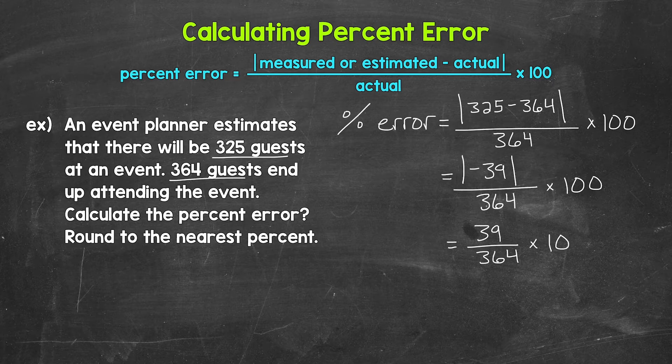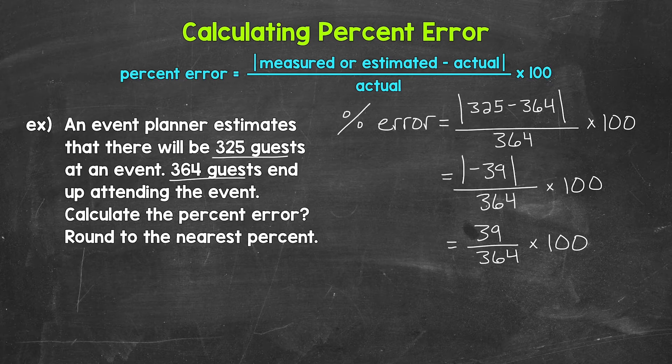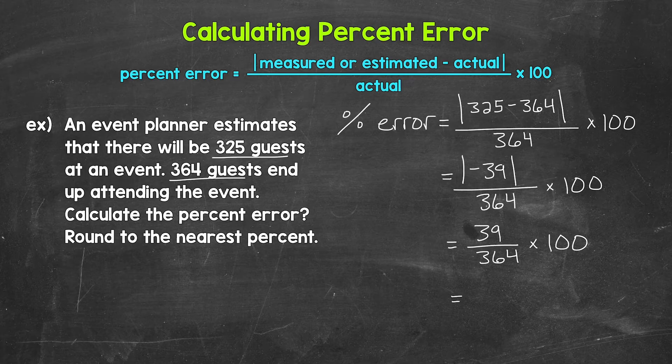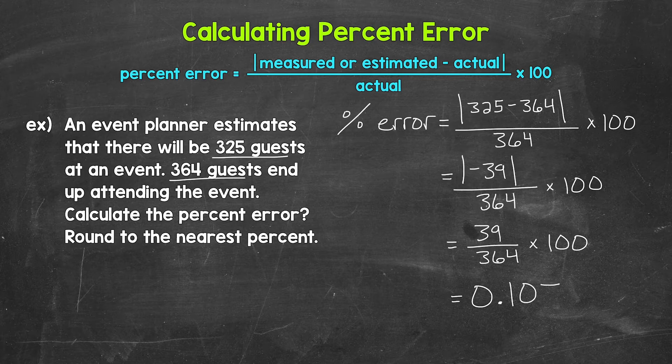And now we can divide. So we have 39 divided by 364. That gives us 0.107 and that decimal continues on.